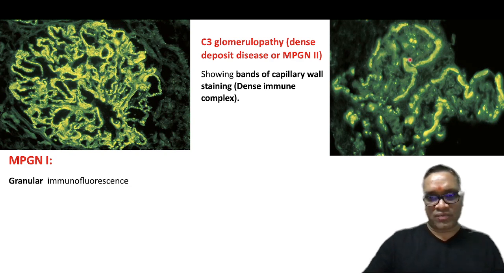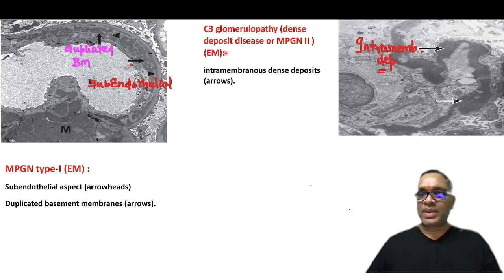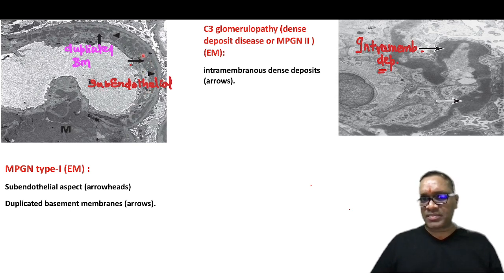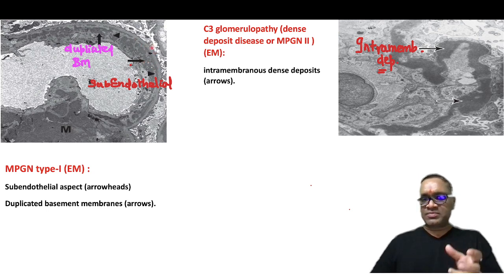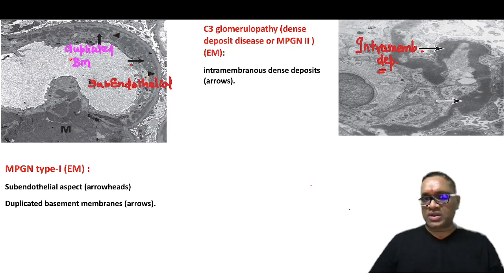On electron microscopy, MPGN type 1 shows sub-endothelial deposits, while MPGN type 2 (C3 glomerulopathy) shows intra-membranous deposits — gray-colored deposits seen within the basement membrane. With the sub-endothelial deposits in type 1, you can notice the basement membrane appears split into two parts due to immune complex deposition, explaining the duplication of the basement membrane appearance.